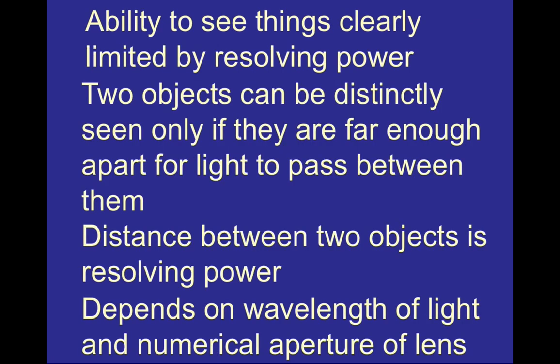What we need to remember about objects under the microscope is that we can only distinctly see two objects if they are far enough apart from each other that light can pass between them. If light cannot pass between those two objects, we will not see them as two different objects. We can measure the distance between two objects — we call that the resolving power of the microscope, which limits our ability to see things clearly.